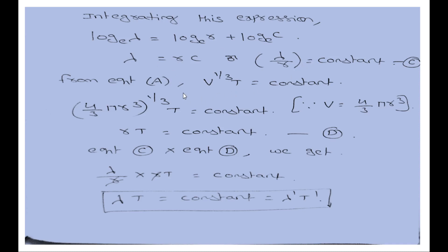From equation A we have V^(1/3) times T equal to constant. The volume of the sphere equals (4/3) pi R cubed, so R is proportional to V^(1/3). Substituting, R times T equals constant. Combining with lambda equals R times C, and multiplying lambda by R and using R times T equals constant, we get lambda times T is equal to constant.